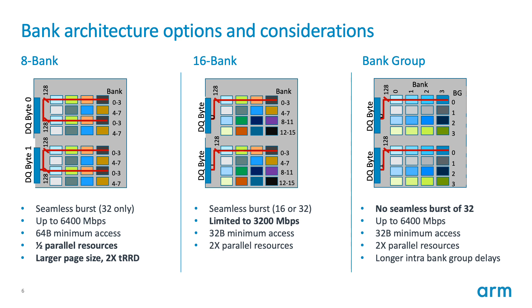Switching gears to bank architecture, LPDDR5 defines three bank architectures: an 8-bank mode, a 16-bank mode, and a bank group mode, which are user-definable at configuration time. The 8-bank mode has a 512-bit prefetch, is limited to a burst of 32 with a 64-byte minimum access, supports the maximum data rate up to 6400 megabits per second, but has half the parallel resources, a larger page size, and longer activate-to-activate delays.